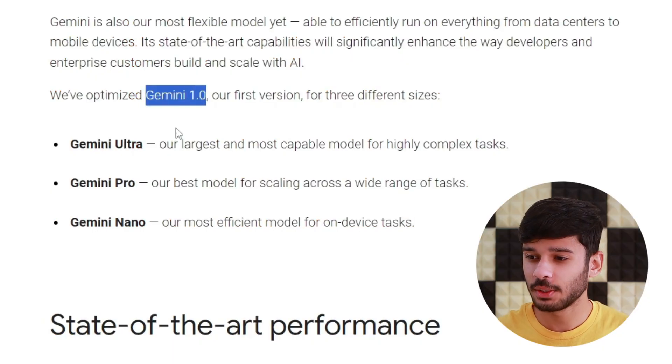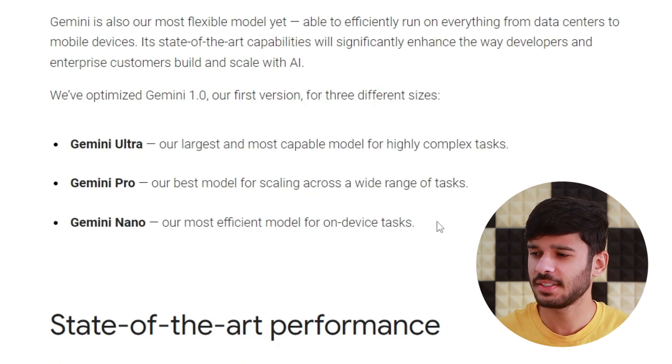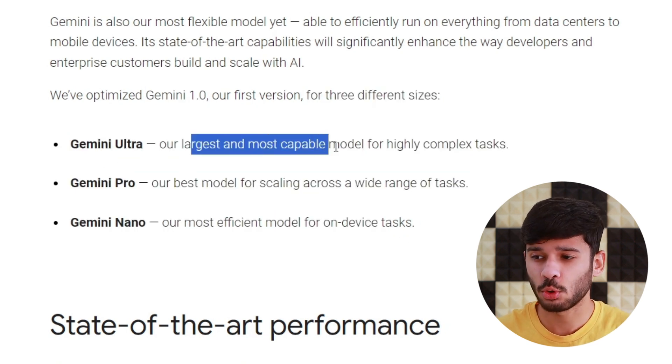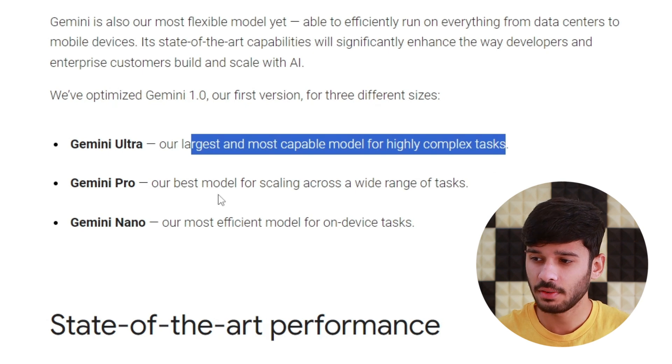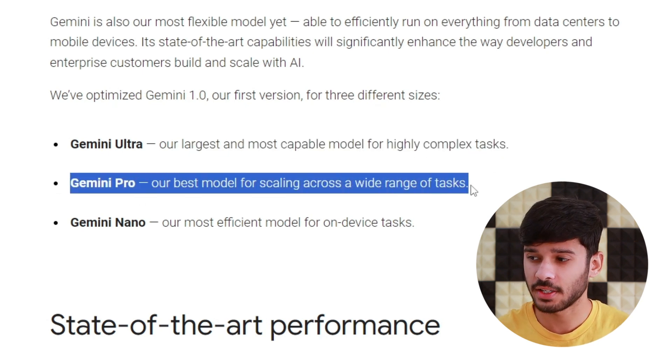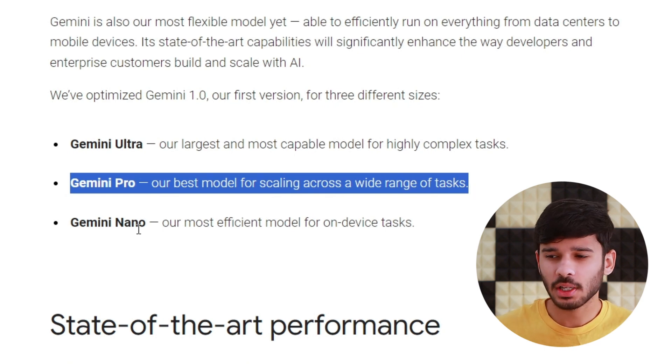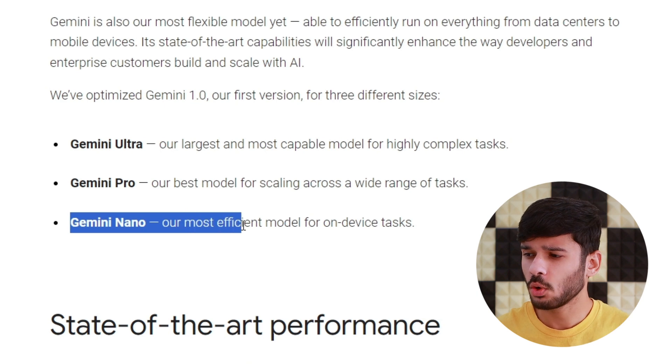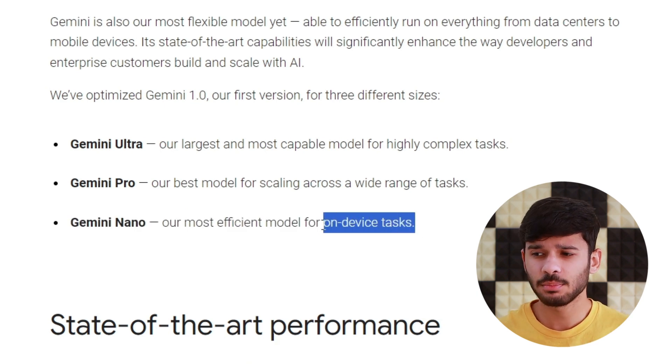Google has just announced Gemini and it beats GPT-4 in benchmarks. Here are the things you need to know about it. This is Gemini version 1.0 and it's going to start off in three different sizes. First is Gemini Ultra, which is the largest and most capable model. Then we have Gemini Pro, which is the best model for scaling across a wide range of tasks, and Gemini Pro is the model which we have access to now. Then we have Gemini Nano, which is for on-device tasks and seems to be designed for mobile use cases.